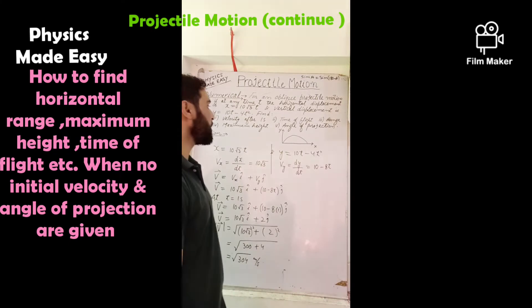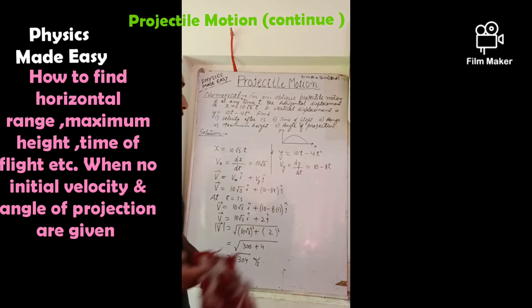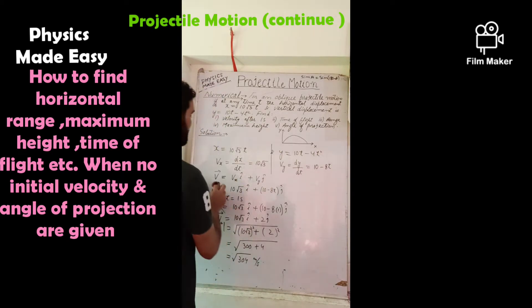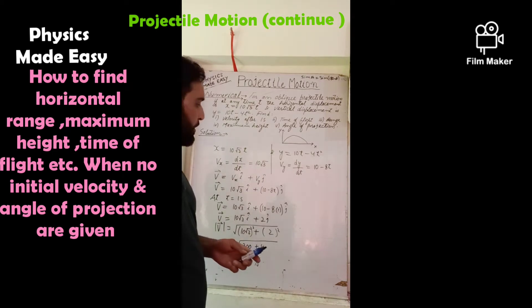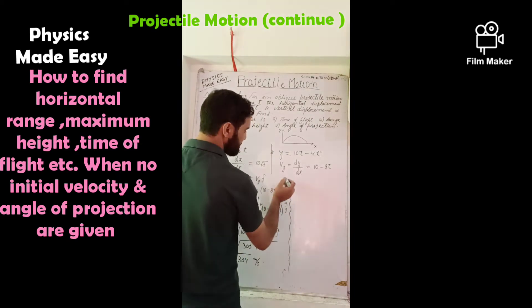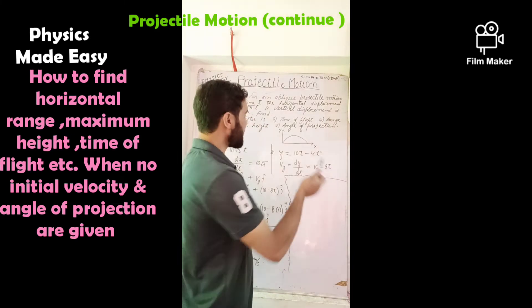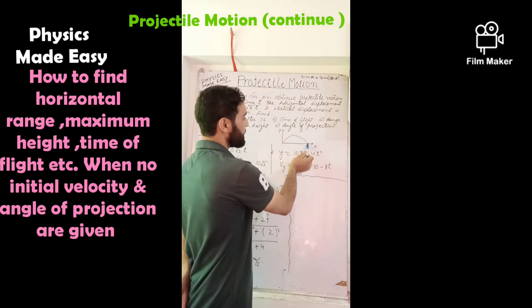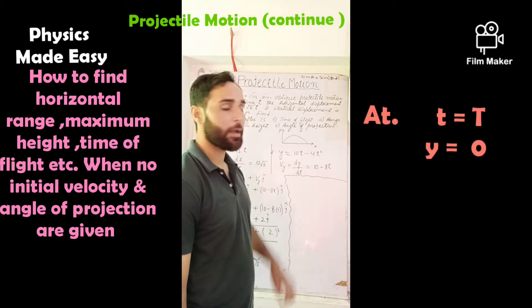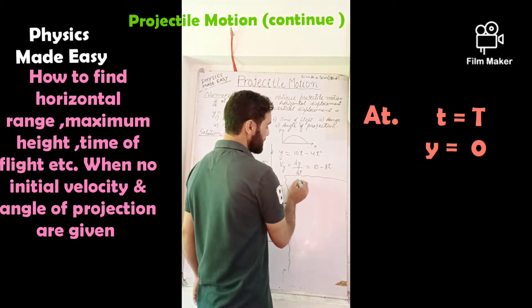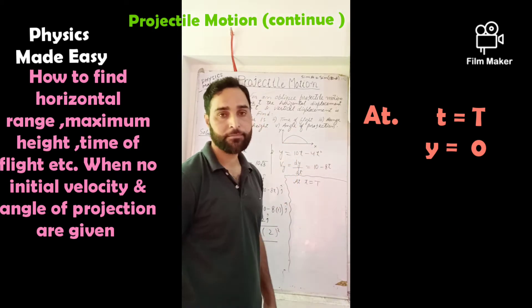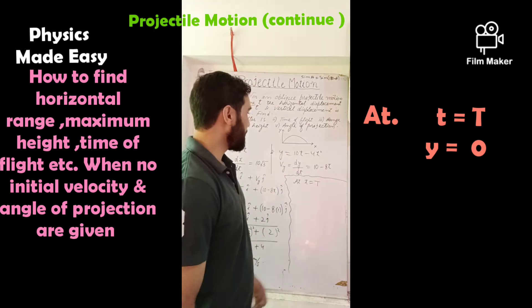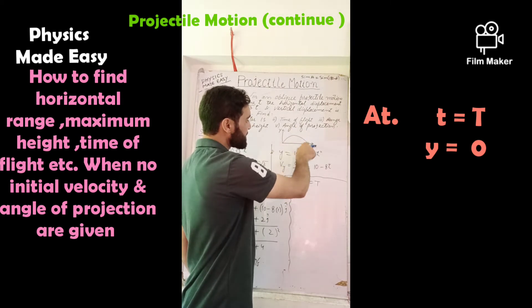Now for the second part: finding the time of flight. Time of flight is the time taken by the particle from the point of projection to the point of impact. At the point of impact, t equals the time of flight T, and at that point the vertical displacement y is zero.